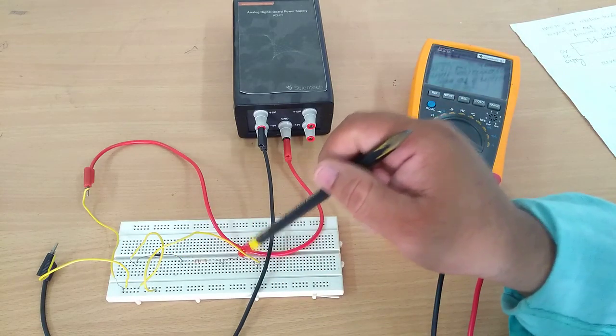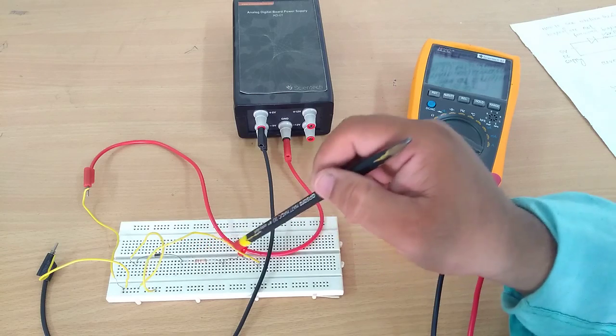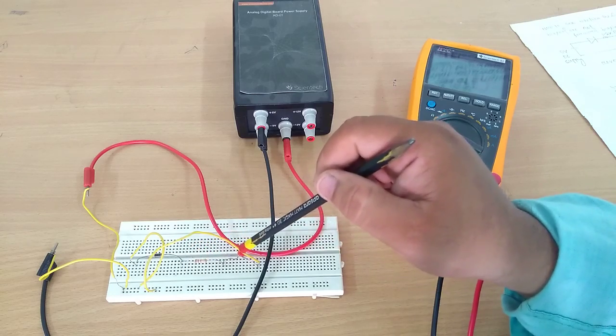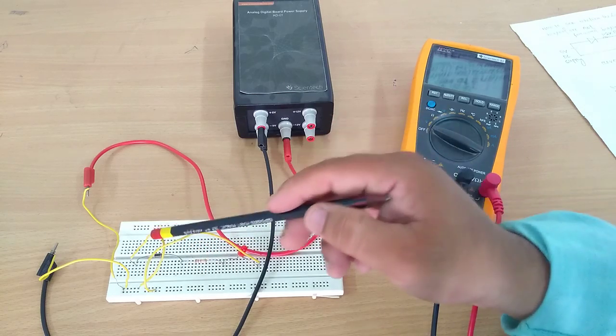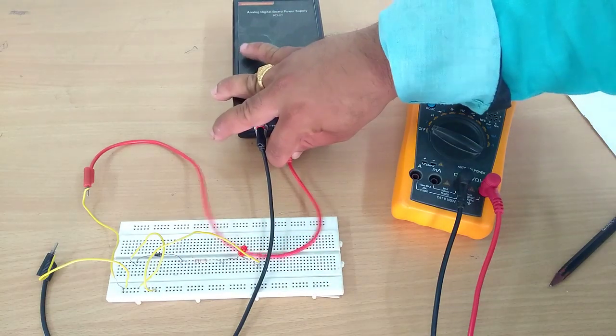So the loads they remain inactive. So I can say that diode is in reverse biasing condition. Again you can see if I will change the polarity.